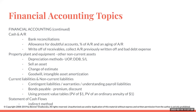When we get into property, plant, and equipment or other non-current assets, we cover the depreciation methods: units of production, double declining balance, and straight line. What happens when we sell an asset? What happens when we have a change of estimate? How do I deal with goodwill, intangible asset amortizations, current liabilities and non-current liabilities? We cover contingent liabilities, warranties, and understanding payroll.